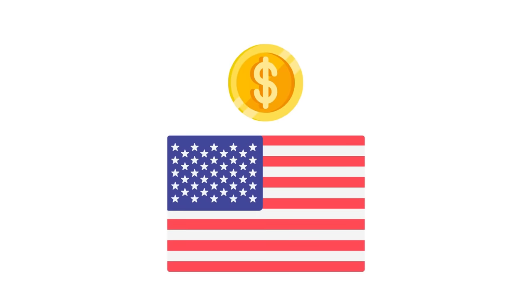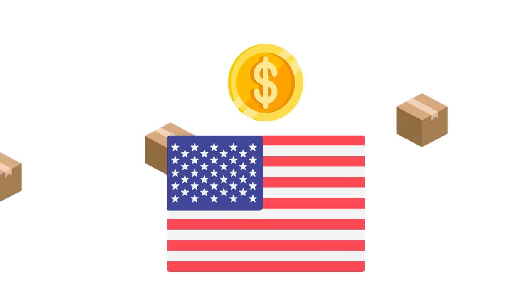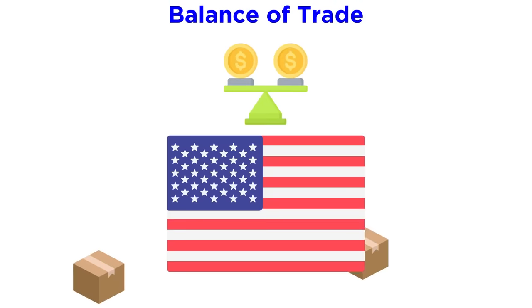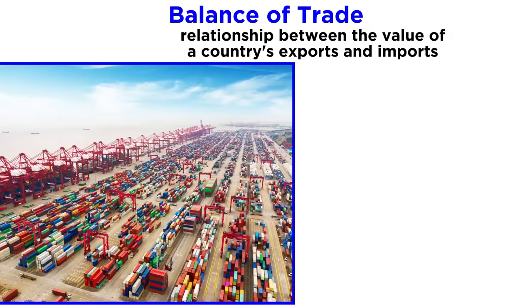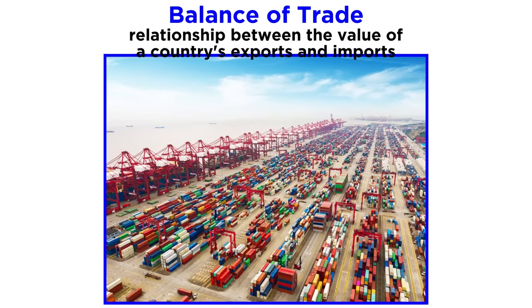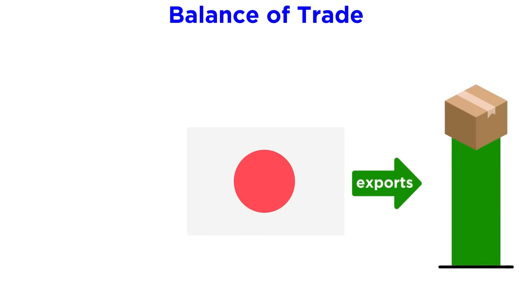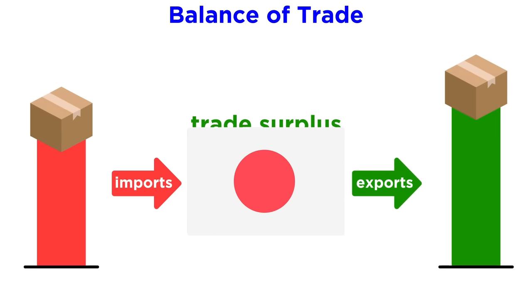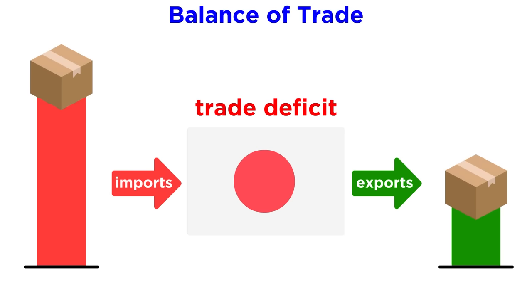Because the value of a country's currency is affected by the overall flow of goods and services into and out of a country, exchange rates often affect a country's balance of trade, which is the relationship between the value of its exports and the value of its imports. If a country exports more goods and services than it imports, it has a trade surplus. If a country imports more goods and services than it exports, it has a trade deficit.